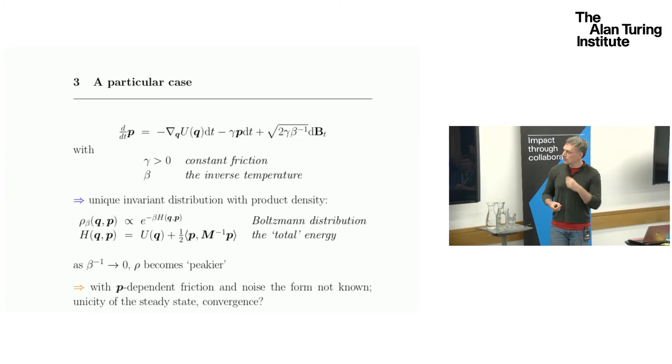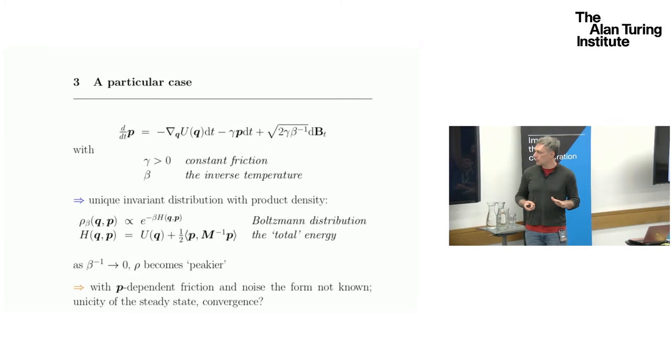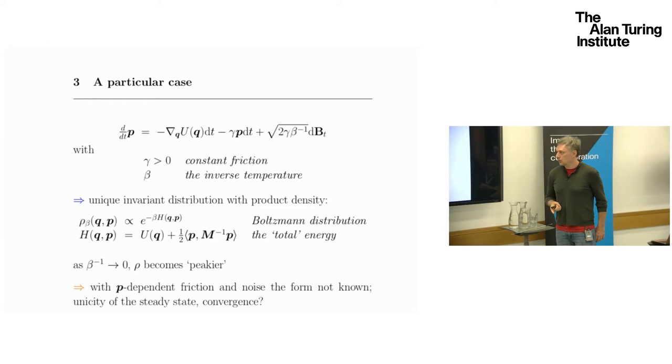This is a particular case where the friction is constant, and so is the temperature. Beta here is the inverse temperature, as usual. In that case, we know lots of things. We know there's a unique invariant distribution that decouples the position and momenta. This is given by the total energy of the system, which is a joint contribution of the kinetic term and the potential U.